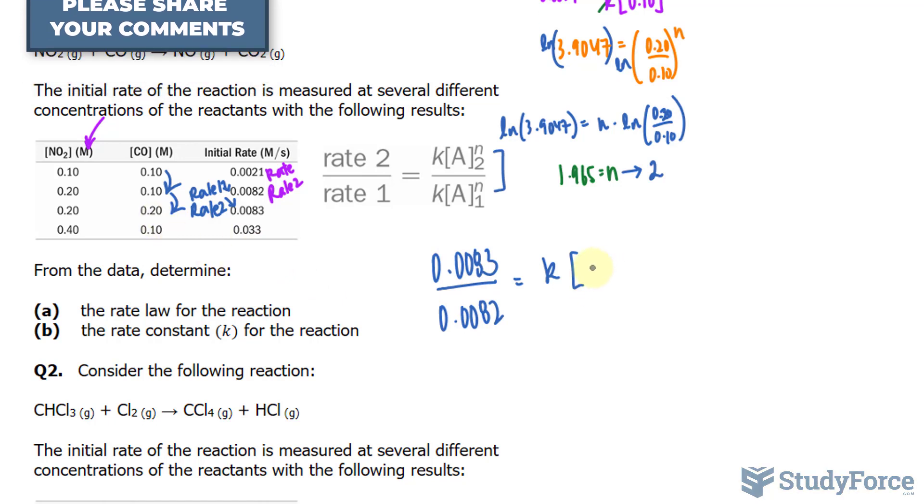We have 0.0083 over 0.0082, and that's equal to k times the concentration of rate 2, 0.2, over k times the concentration of rate 1, 0.1.